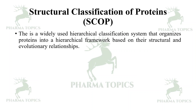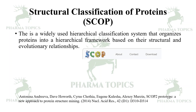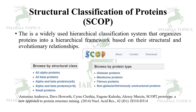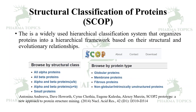SCOP is a widely used hierarchical classification system that organizes proteins based on structural and evolutionary relationships. From this site you can browse all-alpha proteins, all-beta proteins, alpha and beta proteins (alpha/beta and alpha plus beta), small proteins, globular proteins, membrane proteins, fibrous proteins, and non-globular or intrinsically unstructured proteins.